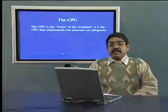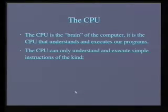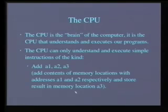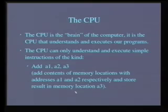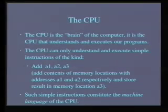Let us now come to the CPU. The CPU is the brain of the computer — it is the component that understands and executes our program. However, the CPU can understand and execute only very simple instructions of the kind: add a1, a2, a3. In this example, this instruction represents the instruction to add the contents of the memory locations whose addresses are a1 and a2, and store the result in the third memory location whose address is a3. Instructions of this kind constitute the machine language of the CPU, and the CPU can only understand and execute programs written in this machine language.